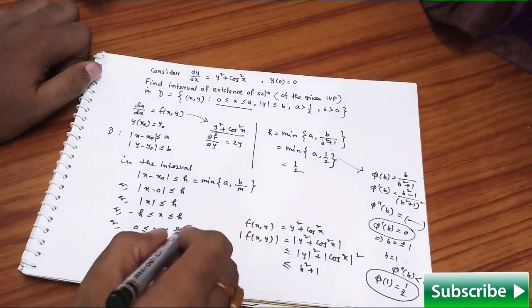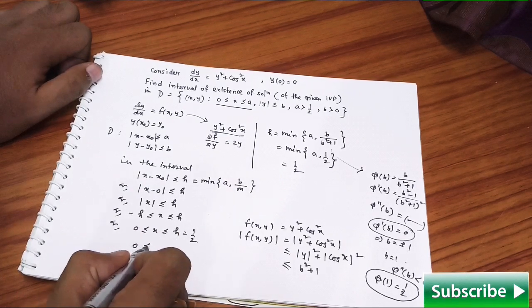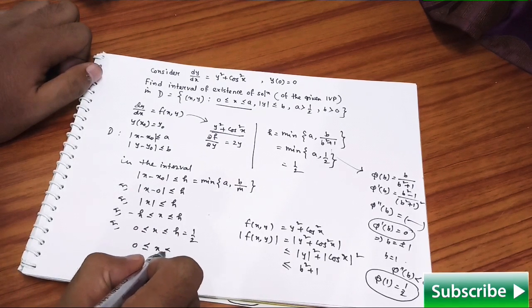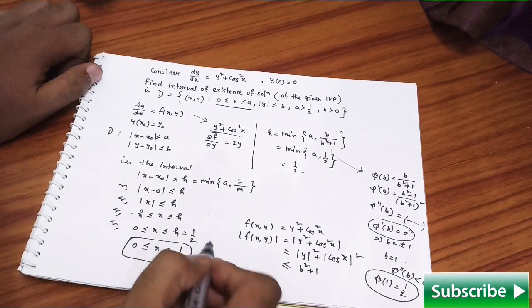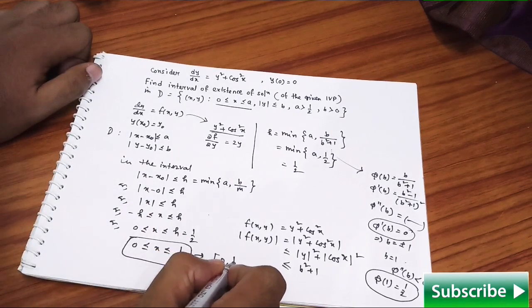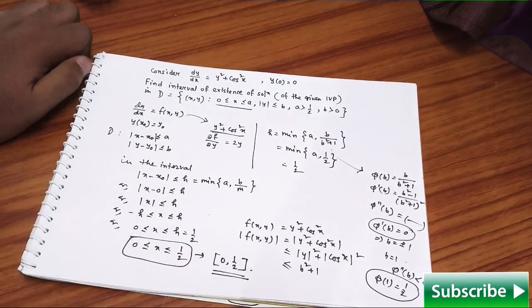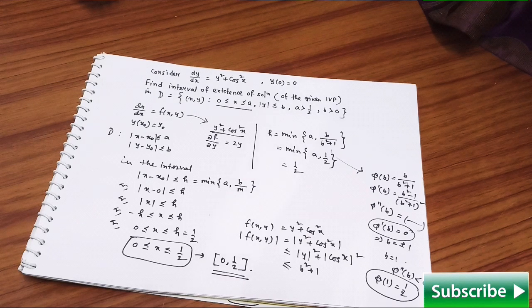That means now, h is 1/2, so it is going to be 0 < x ≤ 1/2. So this is going to be your interval: (0, 1/2] is going to be your interval of existence of the solution for the given initial value problem. This is the whole scenario.